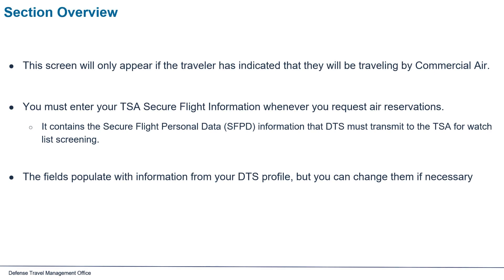This screen will only appear if the traveler has indicated that they will be traveling by commercial air. You must enter your TSA Secure Flight Information whenever you request air reservations. It contains the Secure Flight Personal Data information that DTS must transmit to the TSA for watchlist screening.